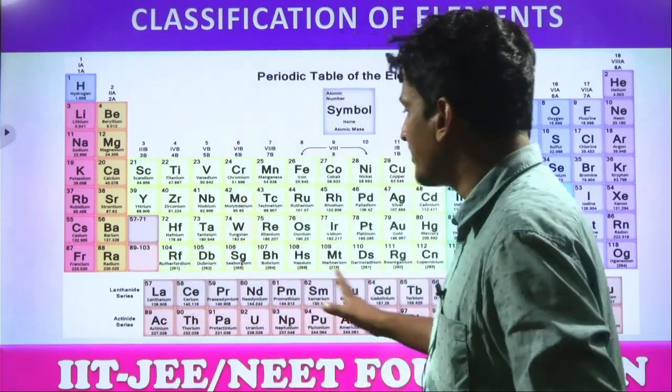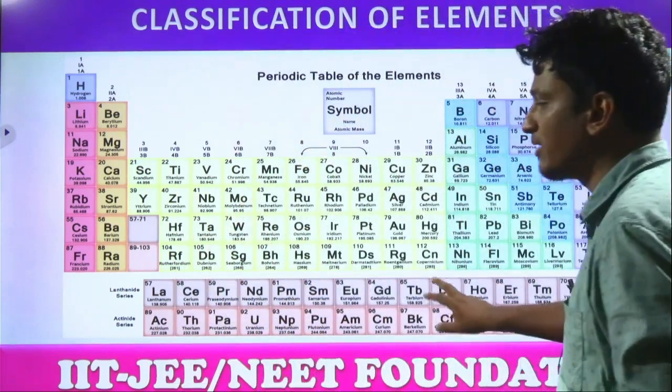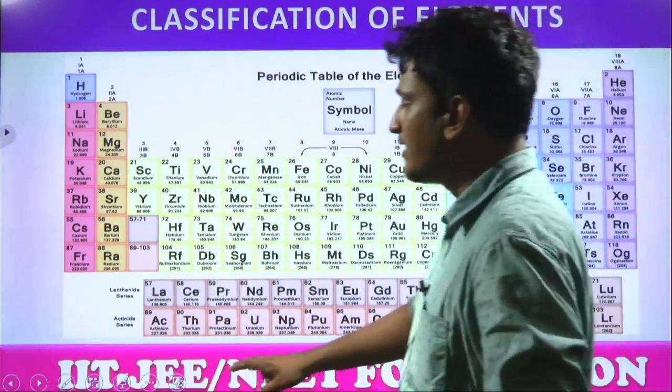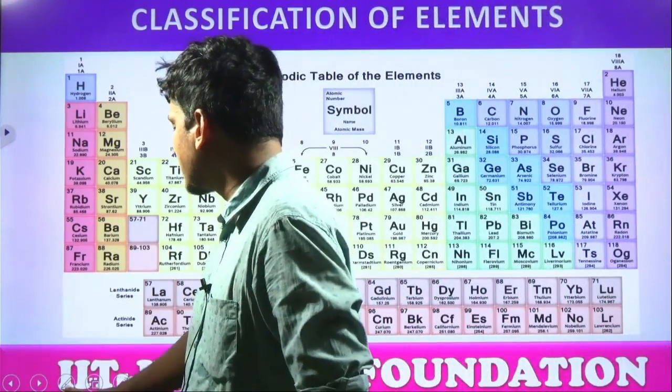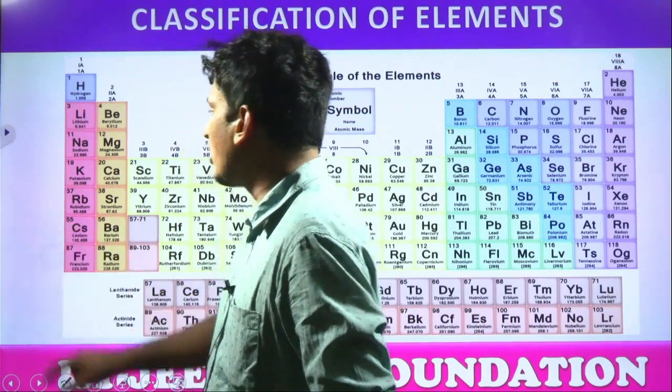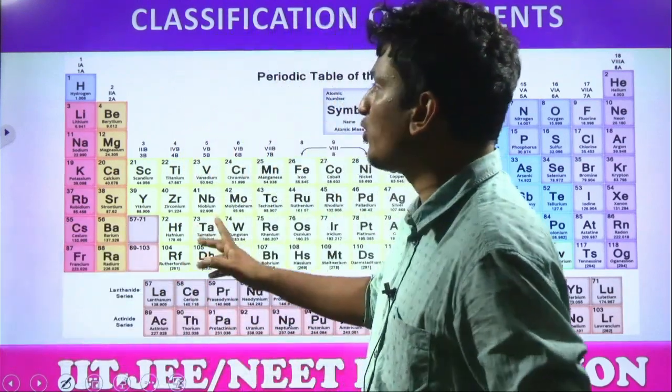This is the modern periodic table, students. In the modern periodic table, all the elements are classified into 18 groups.